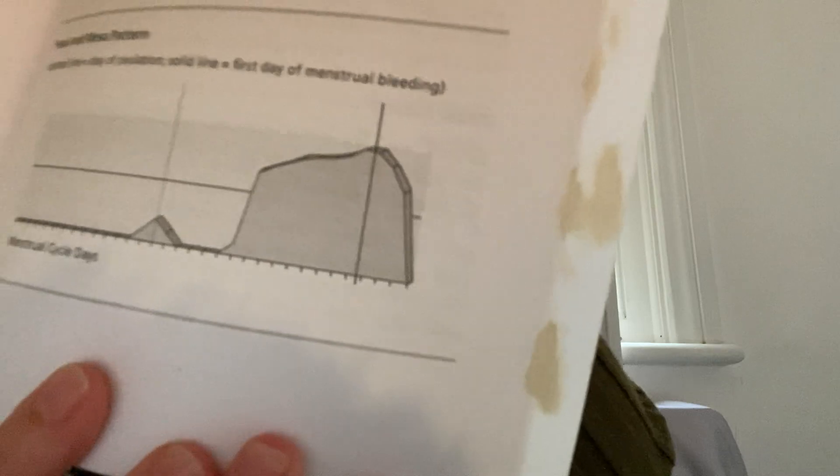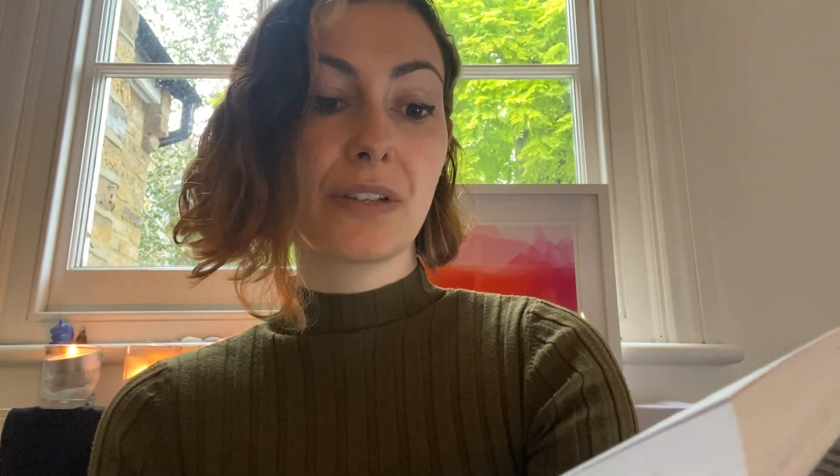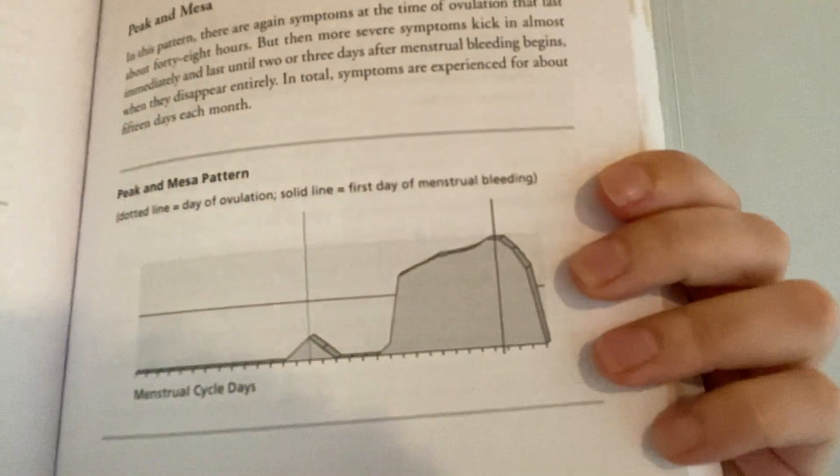The next one is the peak and meser pattern. In this pattern there are again symptoms at the time of ovulation that last about 48 hours, but then more severe symptoms kick in almost immediately and last until two or three days after menstrual bleeding begins, when they disappear entirely. In total, symptoms are experienced for about 15 days each month.